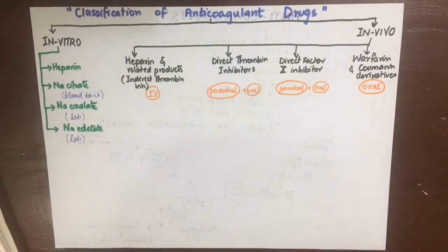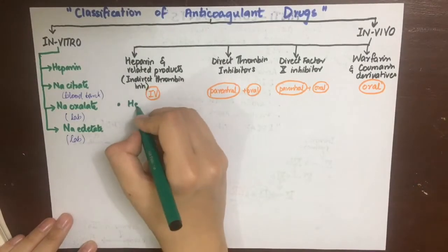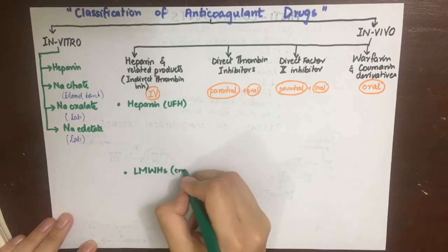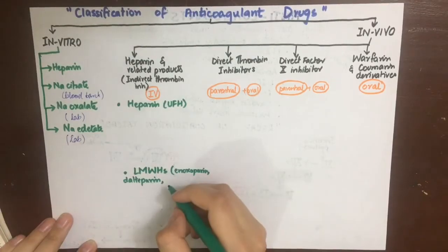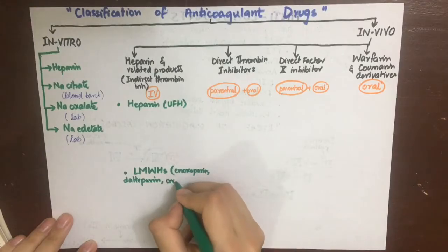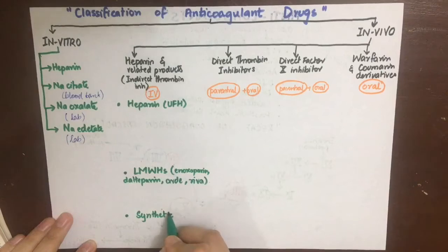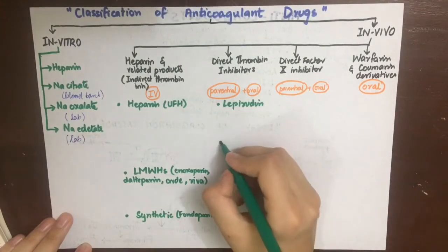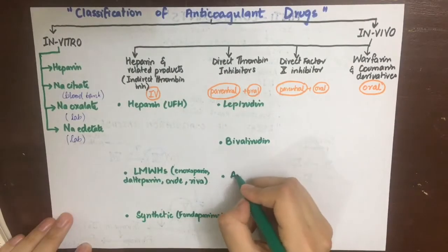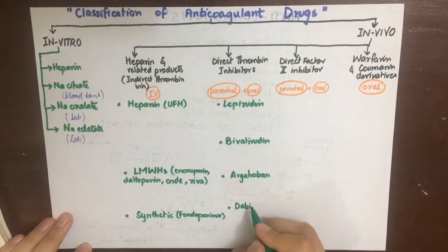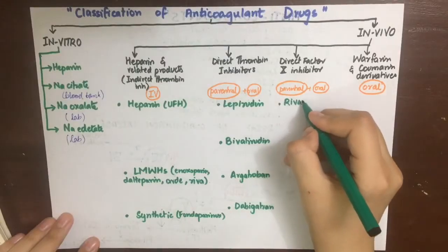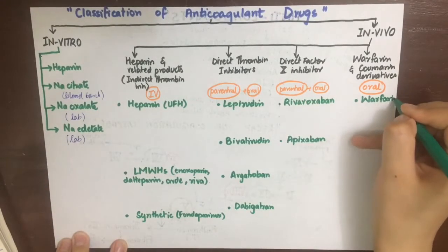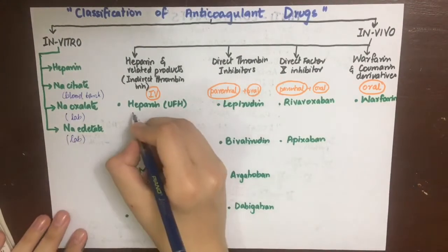There are many differences between heparin and warfarin which will be clear at the end of this video. Heparin includes unfractionated heparin and low molecular weight heparins such as enoxaparin, dalteparin, tinzaparin, ardeparin, dreviparin, etc. We also have synthetic heparin compounds such as fondaparinux. Direct thrombin inhibitors include lepirudin, bivalirudin, argatroban, and dabigatran. Direct factor 10 inhibitors include rivaroxaban and apixaban, while warfarin derivatives include warfarin, dicoumarol, and acenocoumarol.